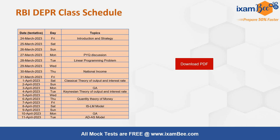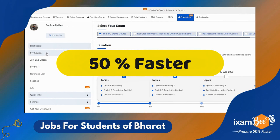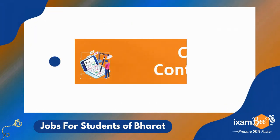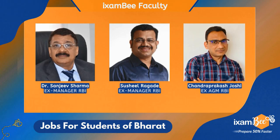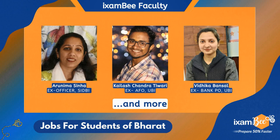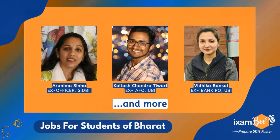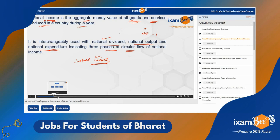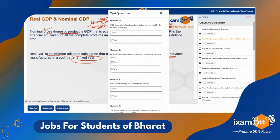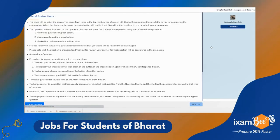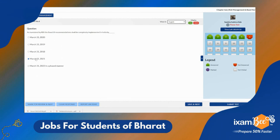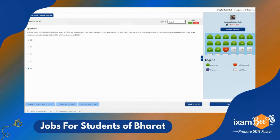iExambe courses help you prepare 50% faster through three unique features. First, crisp content — the courses are conceptualized and curated by experts who have themselves cleared several government job exams. The entire syllabus is covered through short crisp videos, concept check questions, and short summary notes in downloadable PDF format. Lots of practice questions are included, and all content is arranged so you learn gradually and effortlessly.